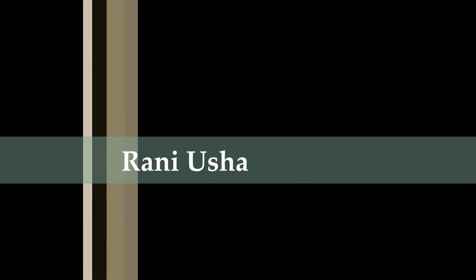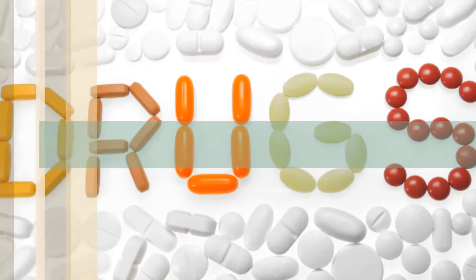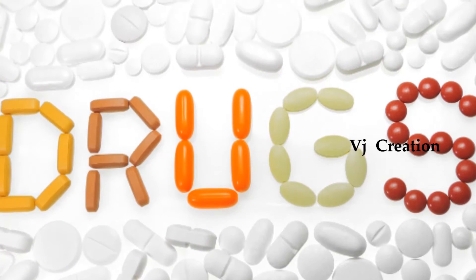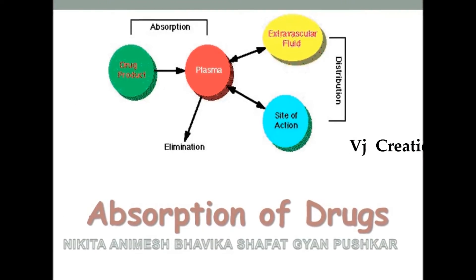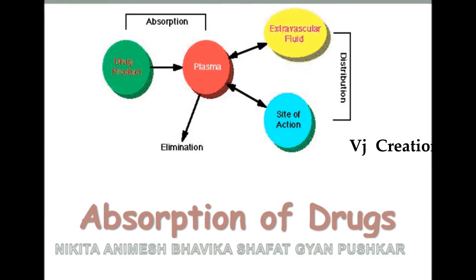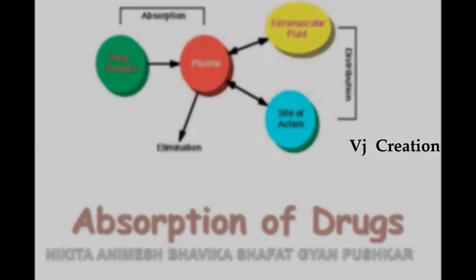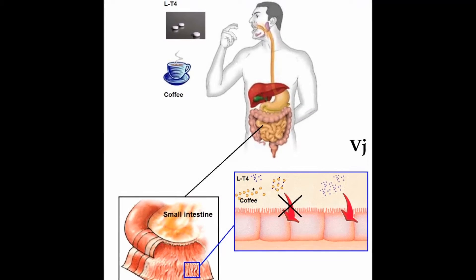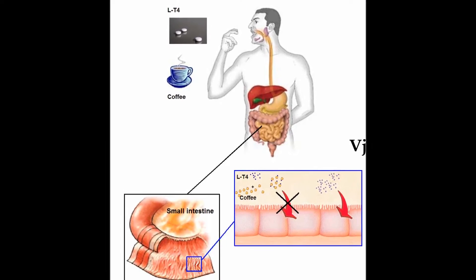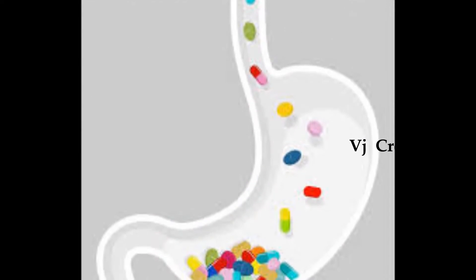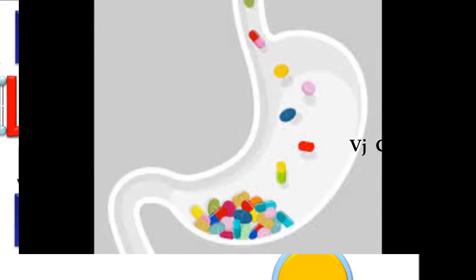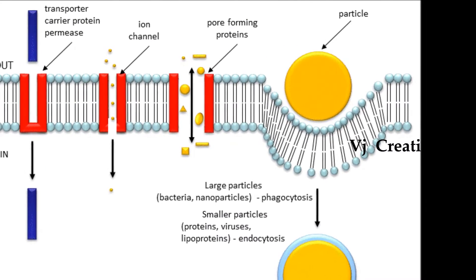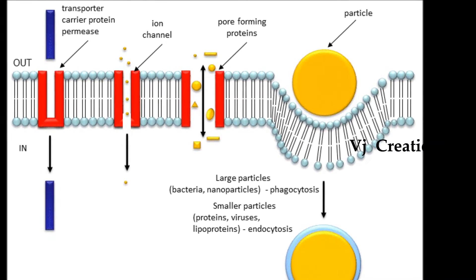Hi guys, this is Rani Usha from VJ Creations. Today I'm going to talk about drugs and how they are absorbed in a human body. A drug can enter into circulation and reach the site of action after absorption. The absorption of a drug involves its passage across a cell membrane. As a rule, lipid insoluble and water insoluble drugs are not absorbed from the gut.